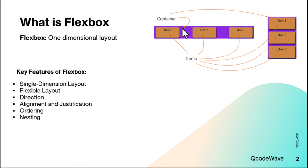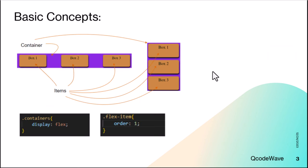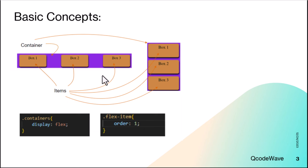A flex container can be nested inside another flex container to create complex layouts. The basic concepts of flexbox are the flex container and flex items. The flex container is the parent element — it becomes a flex container when you apply display flex. The children elements placed inside it are the flex items, and you can use properties like order, align-items, flex-grow, and justify-content on them.